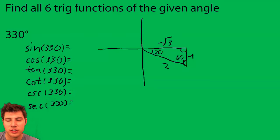So we're gonna do sine is opposite over hypotenuse, so it's negative 1 over 2. Cosine is adjacent over hypotenuse, so it is root 3 over 2.